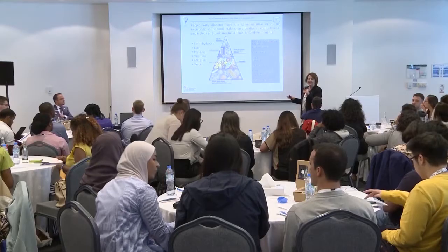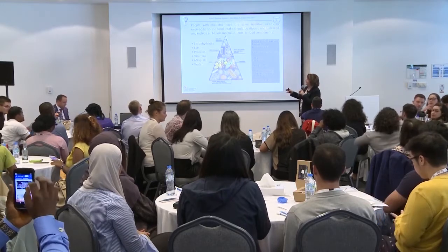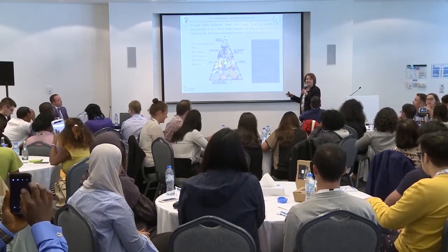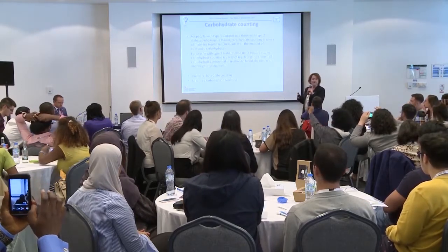The general principle is that the nutritional needs of people with diabetes are the same as the rest of the population. There are six main nutrients we all need: carbohydrates, fats, protein, vitamins, minerals, and water. But for you, the most important nutrient is carbohydrates, and that's why you should know — and I'm sure you already do — how to count the carbohydrates in your food.